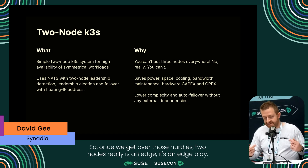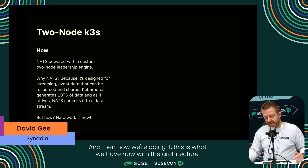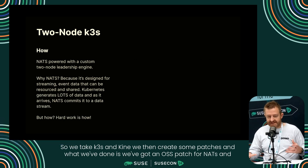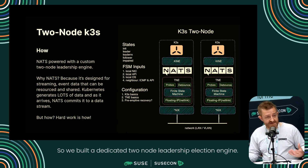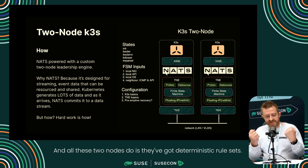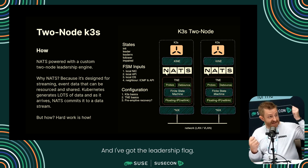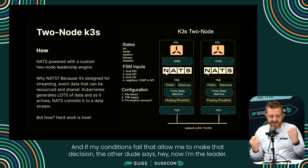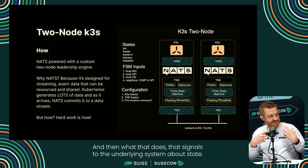Once we get over those hurdles, two nodes really is an edge play - let's go to 10,000 sites and roll this technology out. The way we're doing it: we take K3S and Kine, create some patches. We've got an OSS patch for NATS, and then some secret sauce around two-node stuff. We've built a dedicated two-node leadership election engine. All these two nodes do is have deterministic rule sets - they have a conversation. One says 'I'm the leader and I've got the leadership flag,' and if its conditions fail, the other one says 'now I'm the leader,' which signals to the underlying system about state.